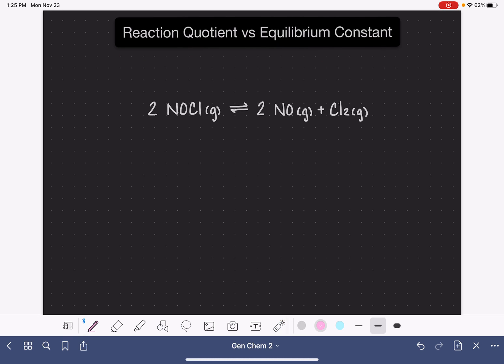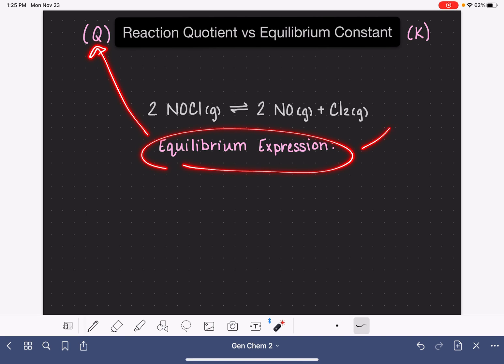The reaction quotient, which is abbreviated with a Q, and the equilibrium constant, which is abbreviated with a K, are both numbers that we can calculate from what we call the equilibrium expression. The equilibrium expression is kind of like a formula. It's usually a fraction, and it is just simply this formula that we can use to calculate either Q or K.